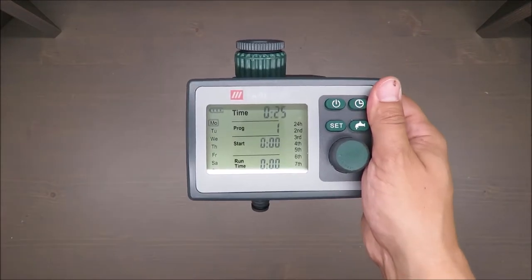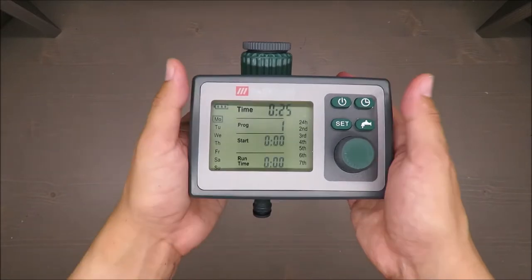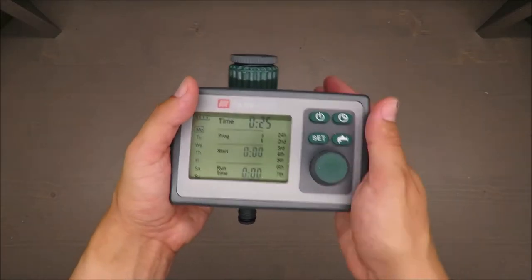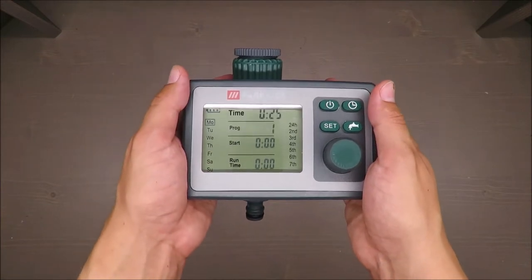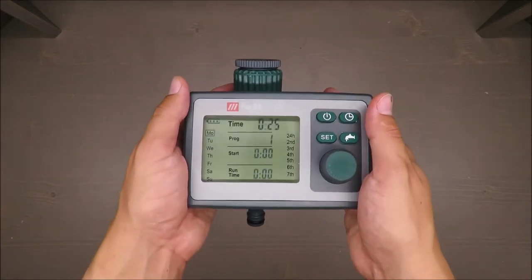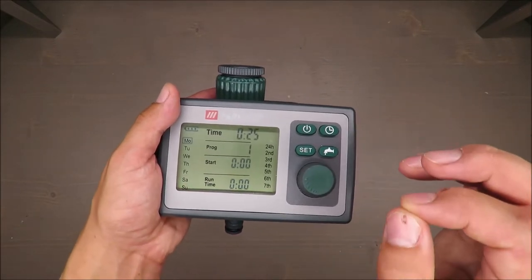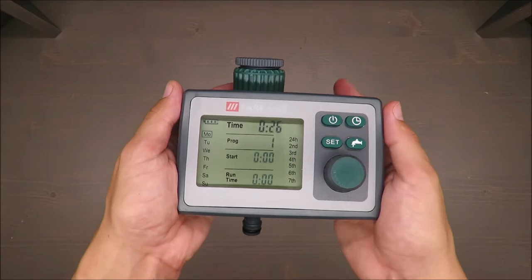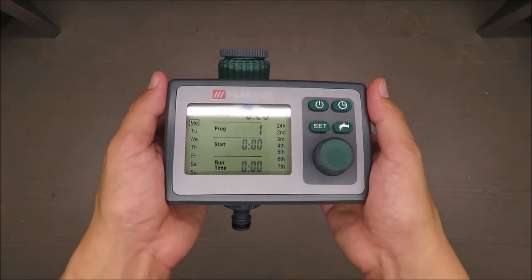Irrigation duration: minimum one minute, maximum ten hours - to be precise, nine hours and 59 minutes. So quite a lot. Irrigation rhythm is daily or weekly, so there's plenty of adjustment options.